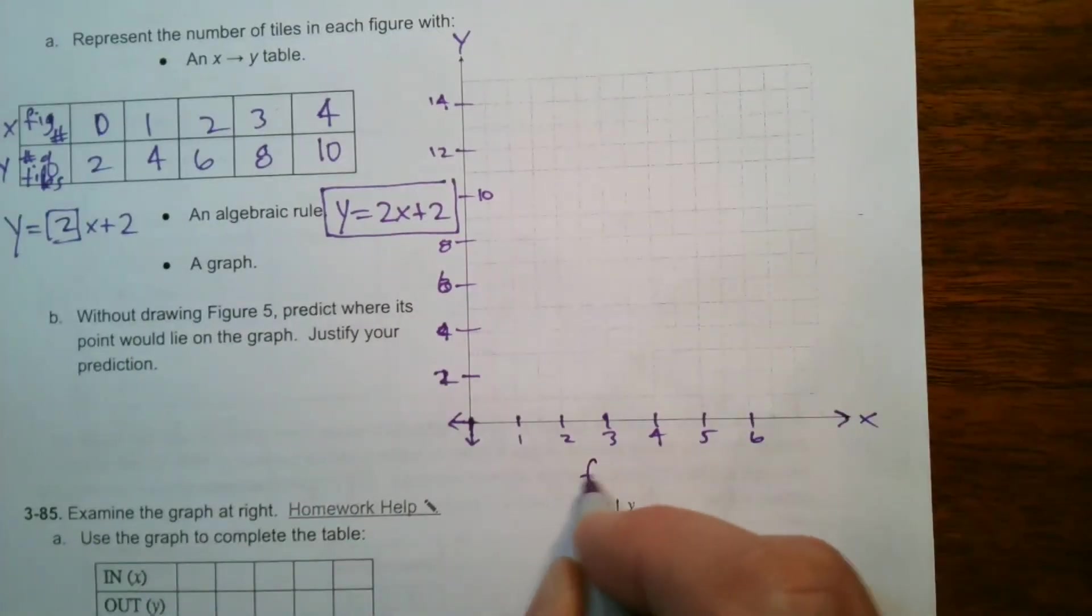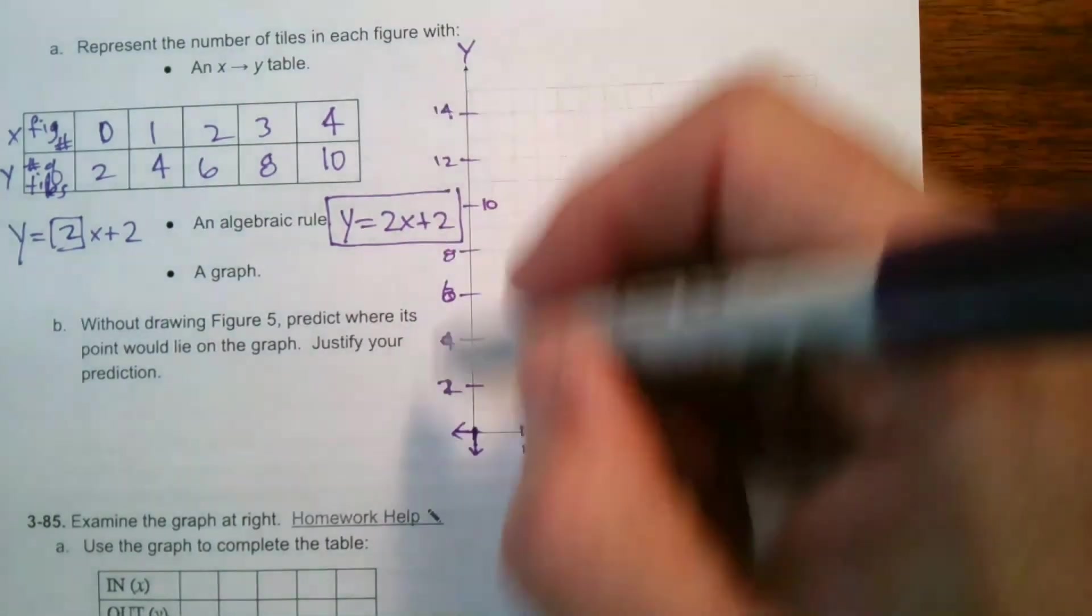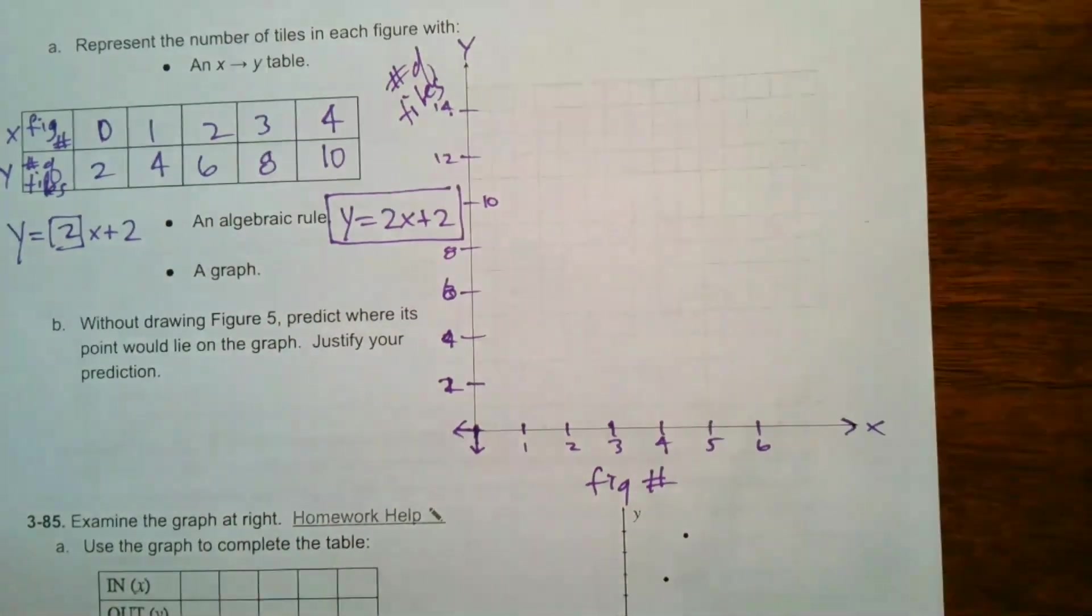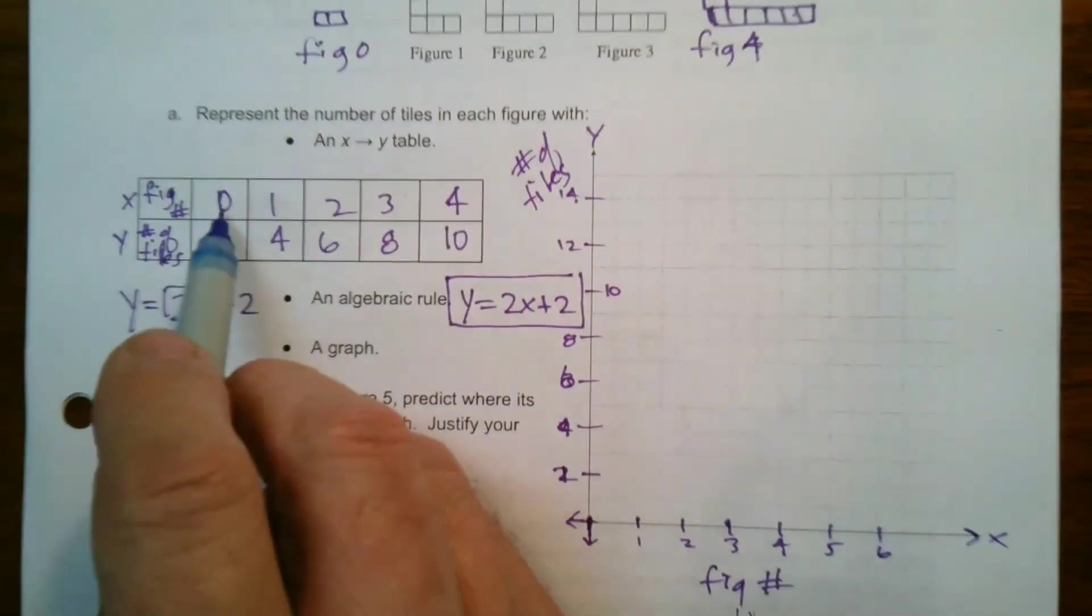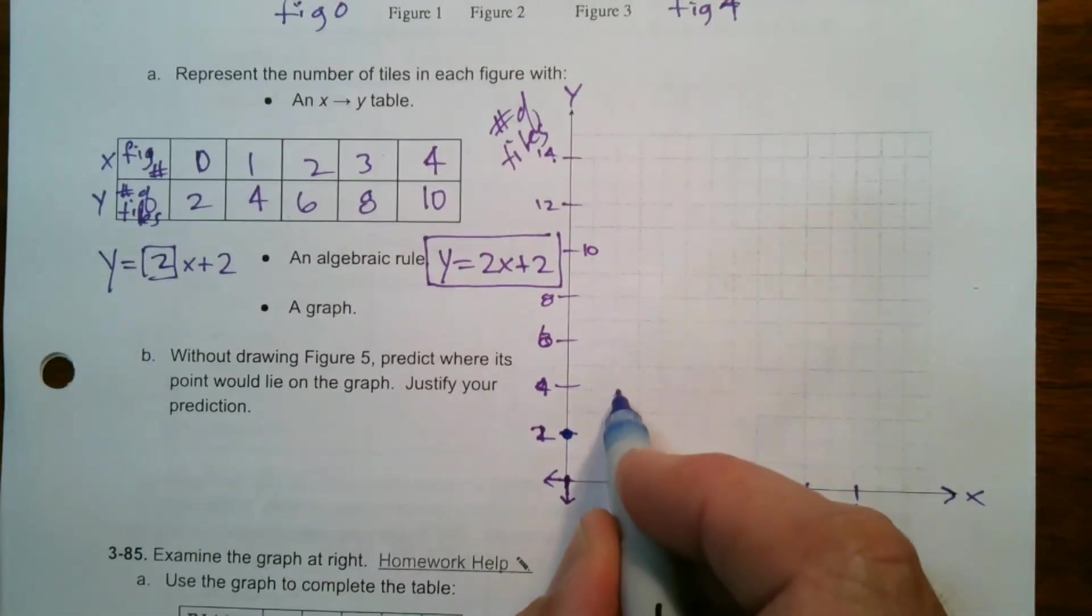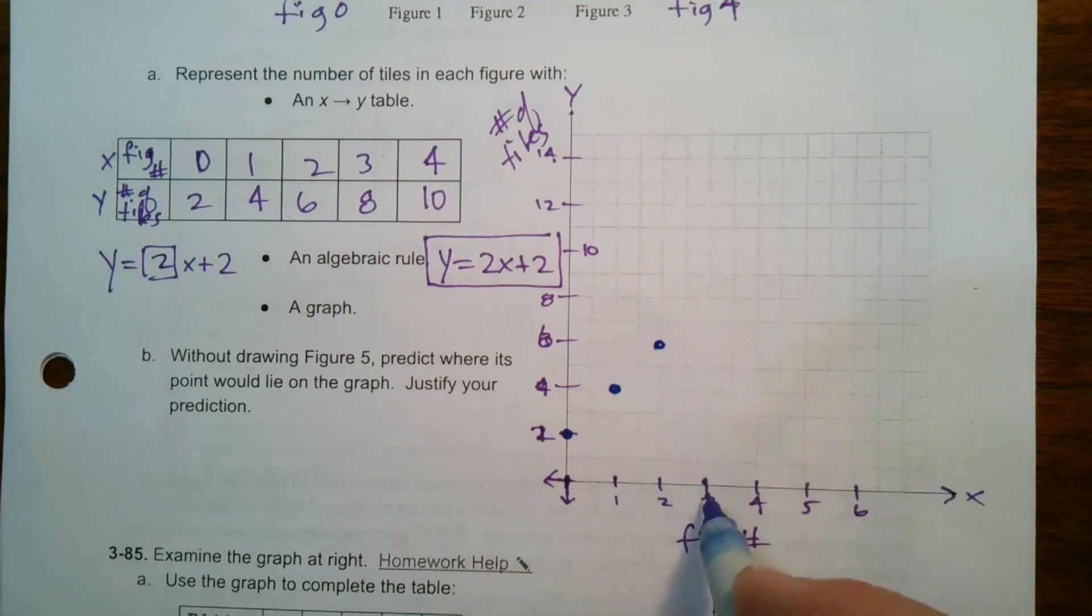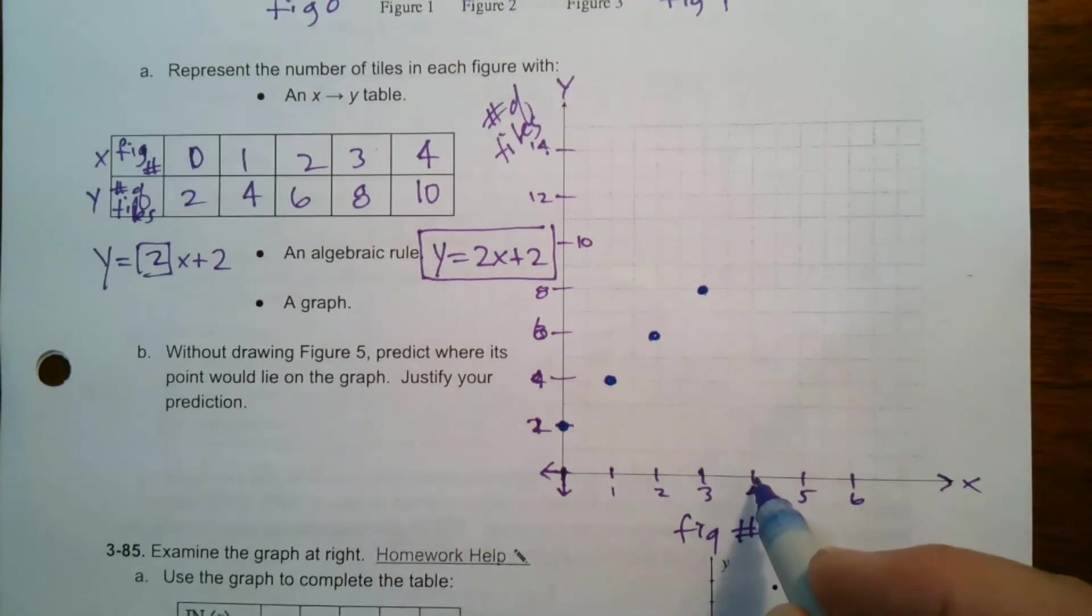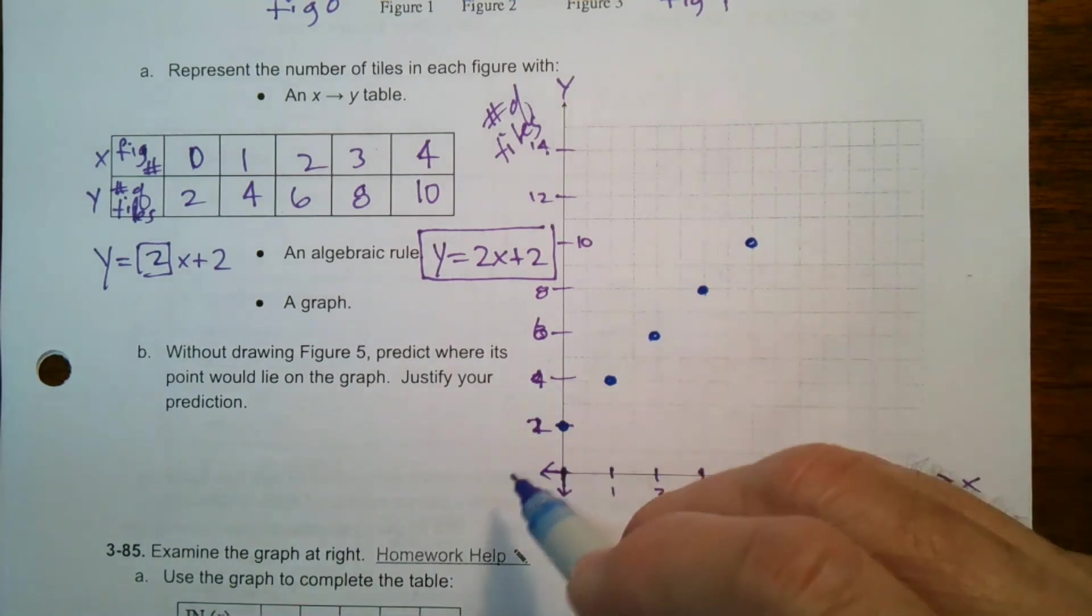All right so now let's graph them. So once again x is the figure number so it's nice on your graph to actually label your axes and then my y-axis here is the number of tiles. So we have, let's just graph our points. So the zero is at two, so that's zero two. One is at four, two is at six, right there. Three is at eight, right there. And four I have at ten.